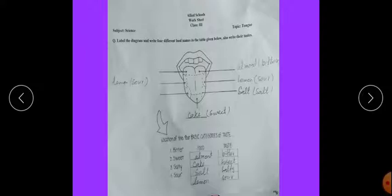The words are bitter, sweet, salty and sour. Almond is bitter, cake is sweet, salt is salty, and lemon is sour.